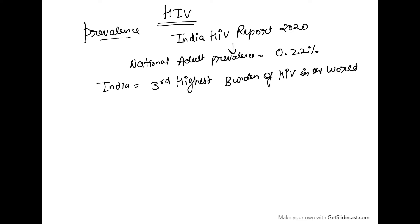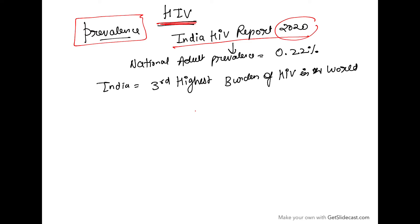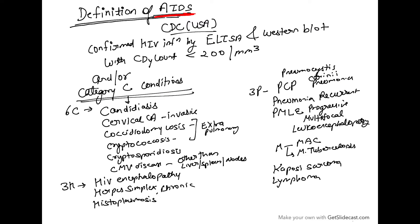Today we are going to discuss HIV infection. As per the India HIV Report 2020, the national prevalence of HIV in adults is 0.22%. India has the third highest burden of HIV in the world.